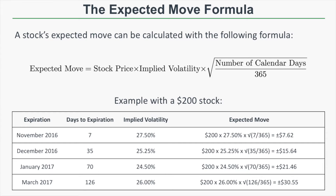Let's look at some examples. Say we have a $200 stock with different expiration cycles at different levels of implied volatility. Starting with the November 2016 expiration at 7 days to expiration, the implied volatility is 27.5%. To get the one standard deviation expected move over the next seven days, we take the stock price of $200 times the implied volatility of 27.5% times the square root of 7 over 365. That gives us an expected move of $7.62, meaning there's a 68% probability that the stock price is between $207.62 and $192.38 over the next seven days.